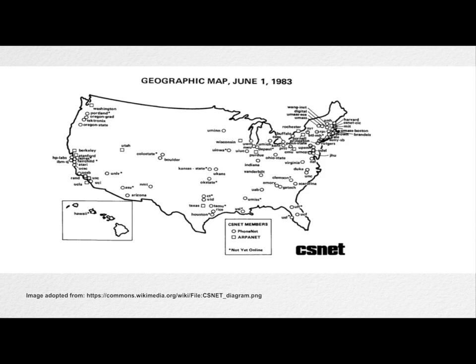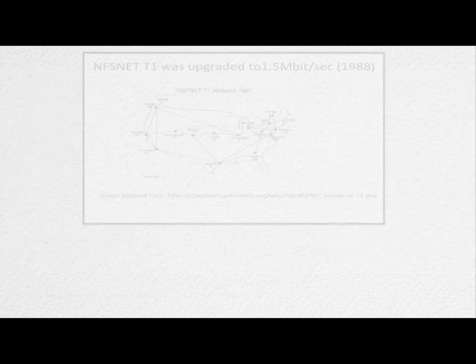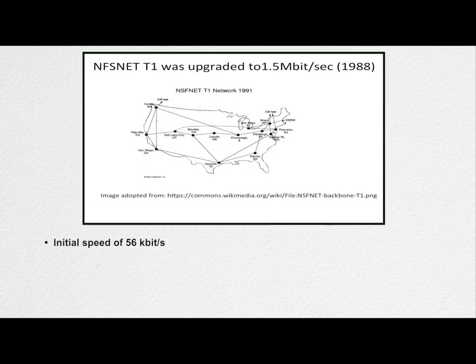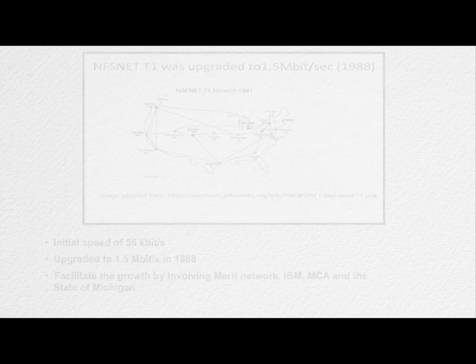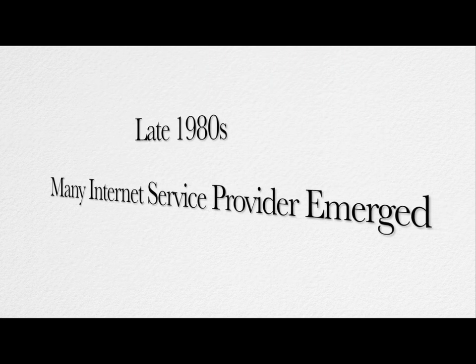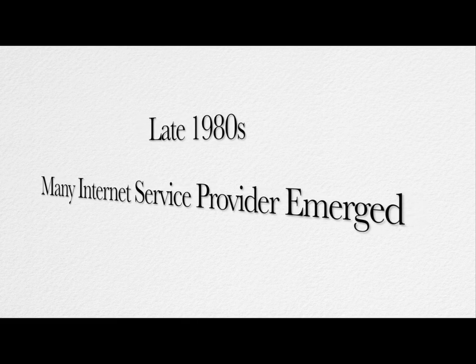The network was not only popular among the research community, but private players also took interest. NSFnet supported a speed of 56 kilobytes per second. It was upgraded to 1.5 megabits per second in 1988 to facilitate the growth of the network, involving Merit Network, IBM, MCI, and the State of Michigan. After corporates realized the strength of this network, they participated in its development. By the late 1980s, many internet service providers emerged to provide the backbone for carrying network traffic.